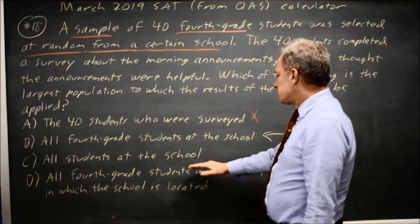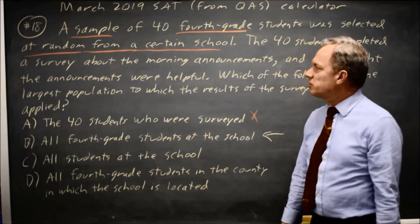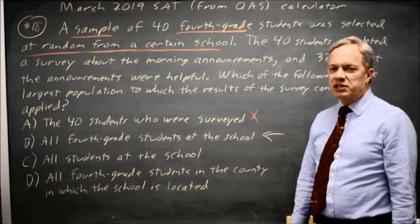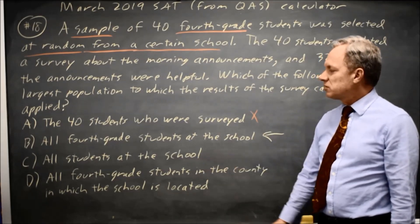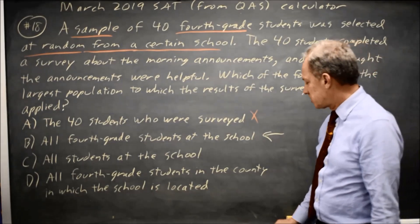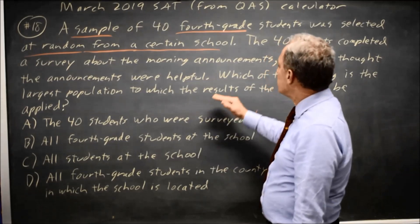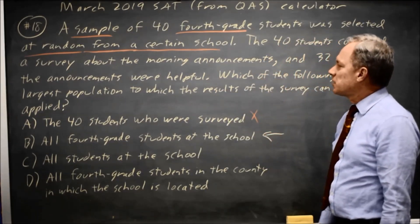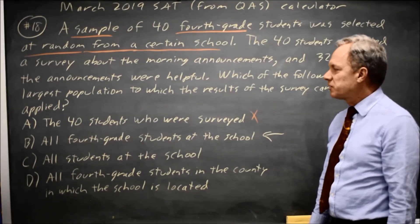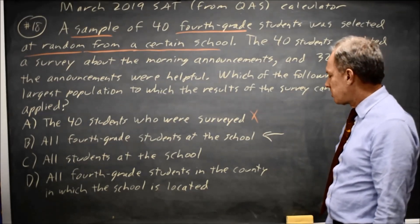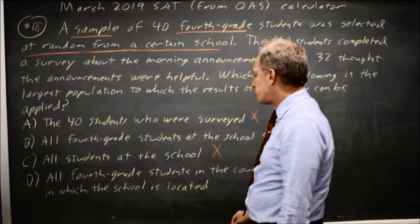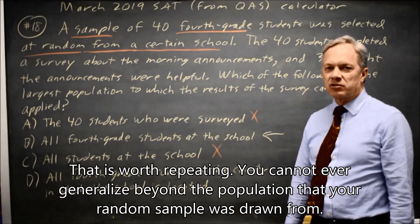Choice C — all students at the school — is like concluding these were good grapes, therefore all fruit at the store is good. Even tasting a large sample of grapes does not allow you to conclude that the strawberries at the store are also good. Similarly, even seeing 32 out of 40 4th graders like the morning announcements does not tell you whether 1st graders and 2nd graders think the announcements are helpful. You can't generalize beyond the population your random sample was drawn from. So choice C is not correct.